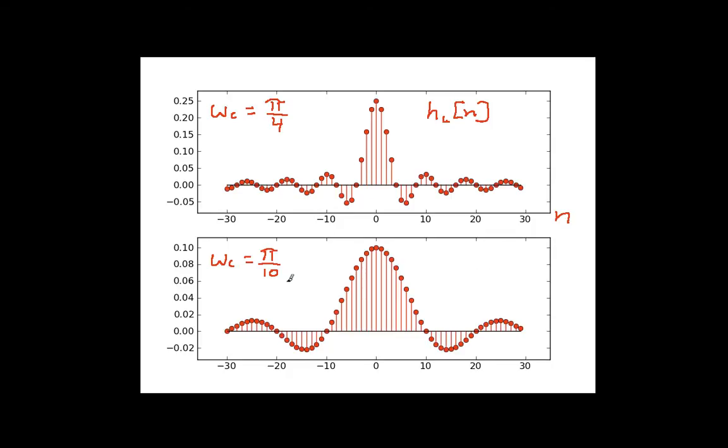I've also plotted this for omega c as pi over 10. So if I have a narrower pass band, I have an impulse response that wiggles more slowly. A wider pass band gives me an impulse response that wiggles more quickly.